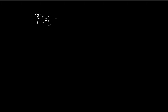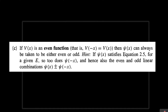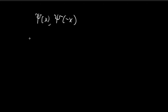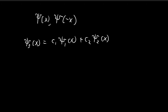Here we have a very important result: ξ(x) and ξ(-x) are both solutions to the time-independent Schrödinger equation. Recall from problem 1b, we proved that for any two given solutions, we can always construct a third solution — a linear combination ξ₃ = c₁ξ₁ + c₂ξ₂.